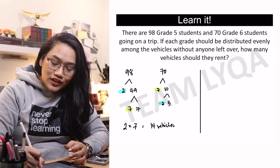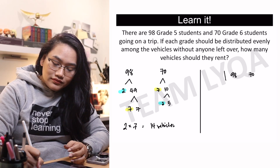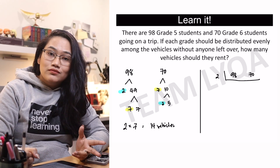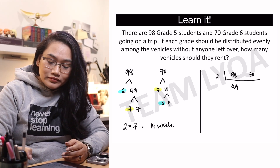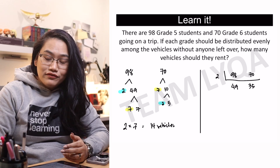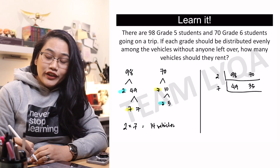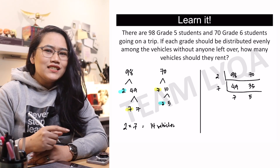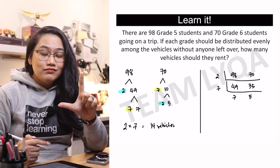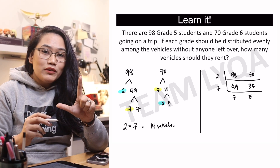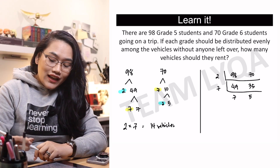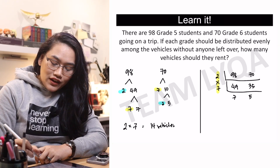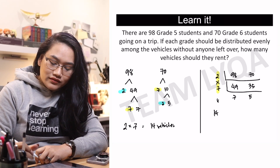Now, another way to get the greatest common factor is to use the ladder method. We have 98 and 70, draw an L-shape, and then we just look for a common factor. Pareho silang divisible sa 2, so lalagin natin yung 2. 98 divided by 2 is 49. 70 divided by 2 is 35. Itong dalawa ay divisible pareho sa 7. 49 divided by 7 is 7. 35 divided by 7 is 5. Last week, nagkalap tayo ng LCM — L yung clue natin for the shape. Pero ang greatest common factor, ang imumultiply na lang natin ay yung mga nasa left side. So we're going to multiply 2 and 7, and the answer is 14. Pareho lang ng sagot — 14 vehicles.